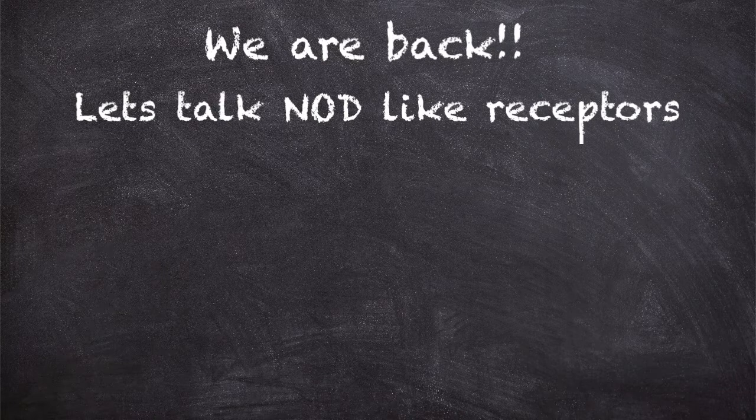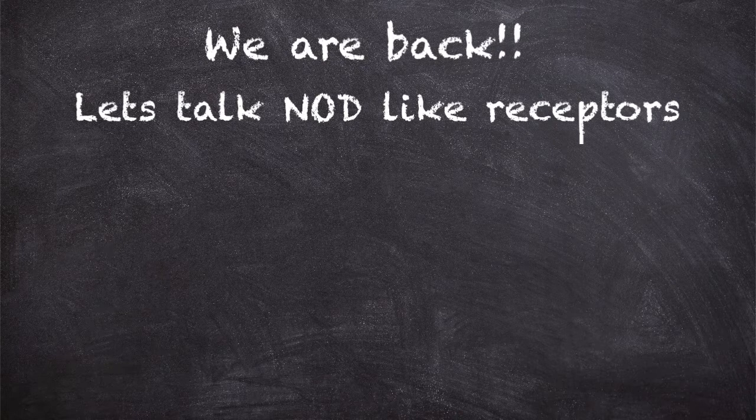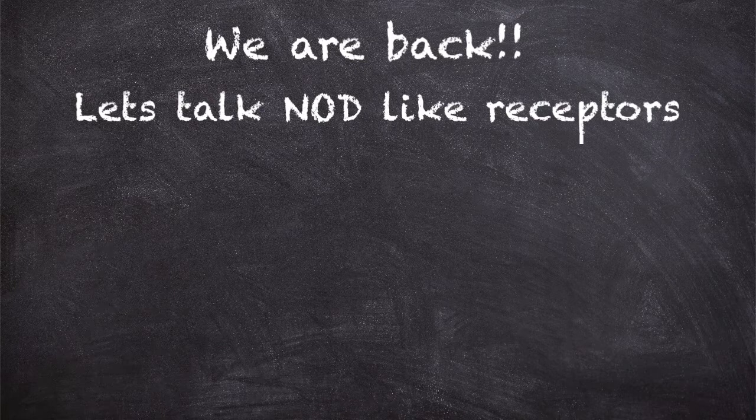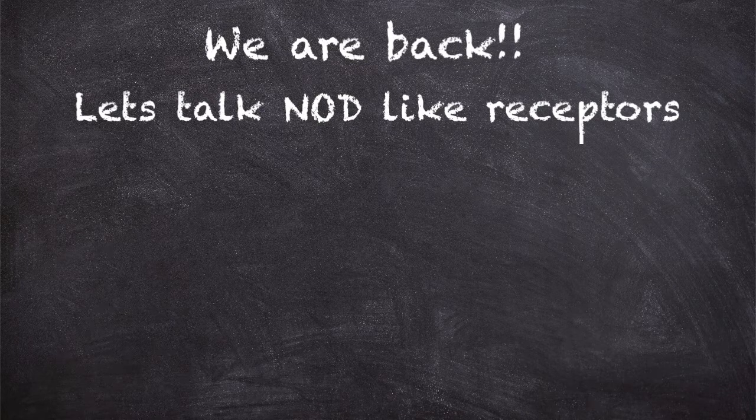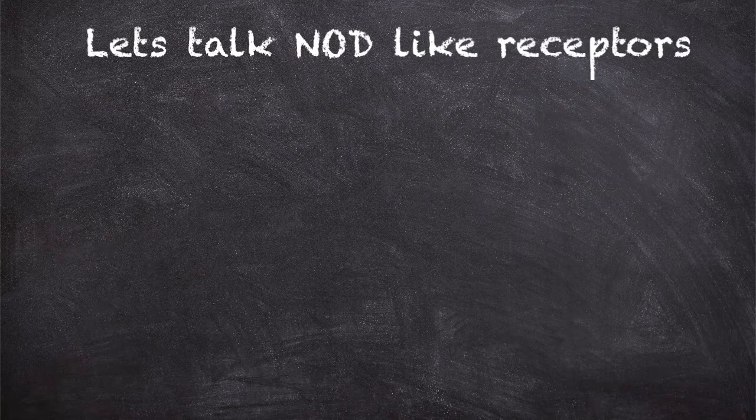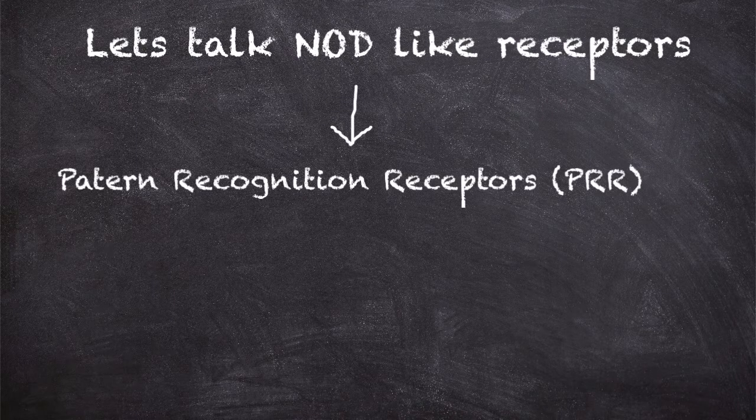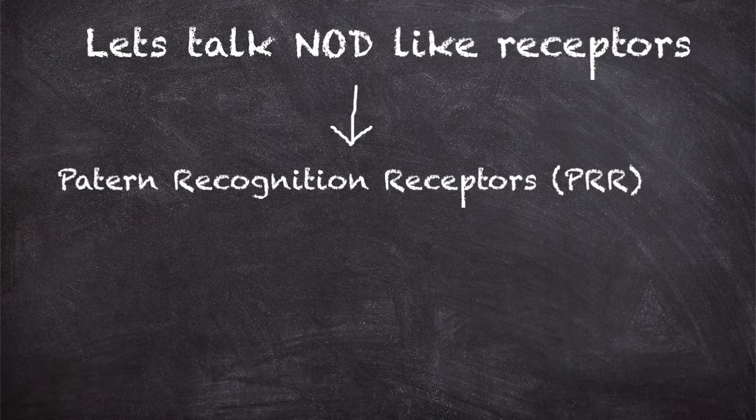The NOD-like receptors and the TLR receptors both belong to the PRR family, the pattern recognition receptor family, and they're detecting PAMPs and DAMPs.